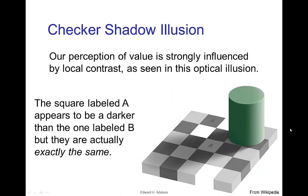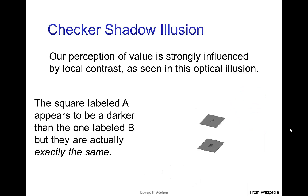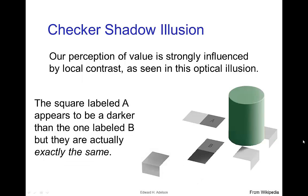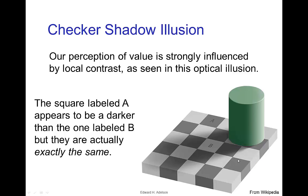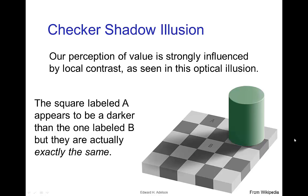Now our ability to judge value is strongly influenced by local contrast. We notice that in the example with the lunchboxes, and it's also a topic of this famous optical illusion, the squares marked A and B on this checkerboard. When we have the entire checkerboard, the squares appear to be different values, but as you see from the construction of the image, they're actually the same value and it's just our brain that because of the contrast of the nearby squares seems to create the illusion that A and B are actually at different values.